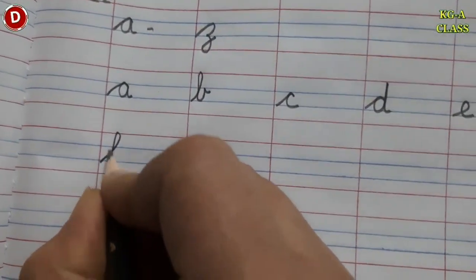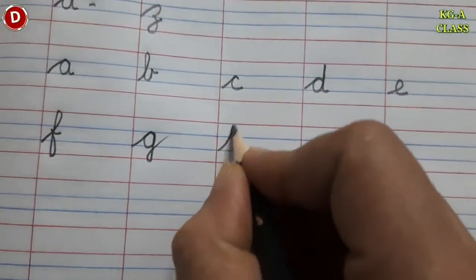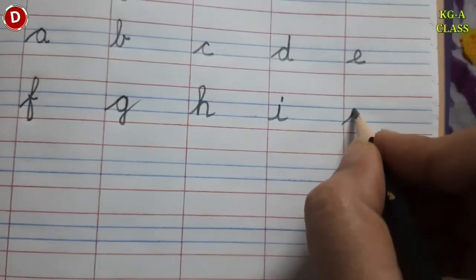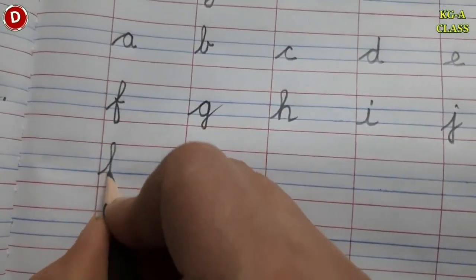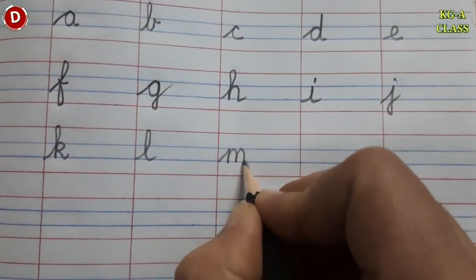Then cursive F, cursive G, then cursive H, then I, cursive J, cursive K, cursive L, cursive M.